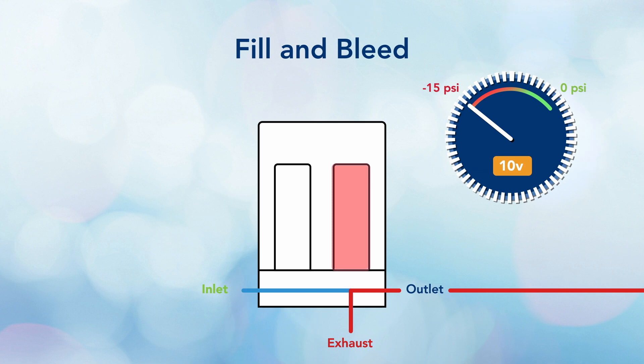If my command changes to reduce the level of downstream vacuum, say from a 10 volt signal to a 5 volt command, the comparative circuit will open up the inlet valve which allows atmosphere into the downstream work area which reduces the level of downstream vacuum to the actual calibrated range.